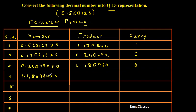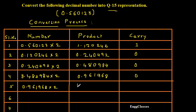I would again multiply 0.480984 by 2 and I am going to get 0.961968. The carry I am going to get is 0, so the next number I would consider is 0.961968. Multiply this again by 2 and I am going to get 1.923936. What is there at the integer part? That is 1. I would consider this as the carry. Next, without the integer part, I am going to write this as 0.923936.